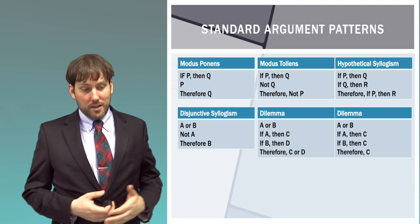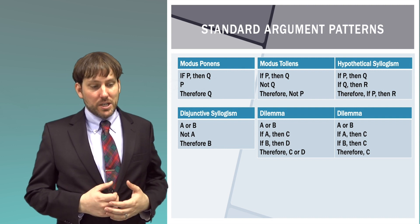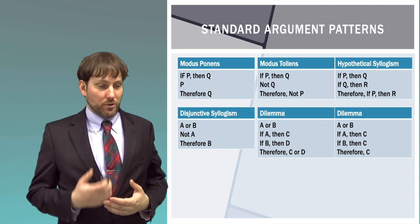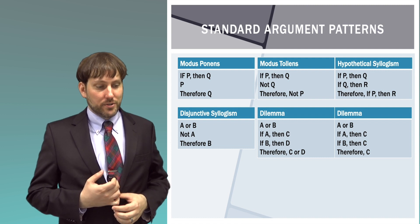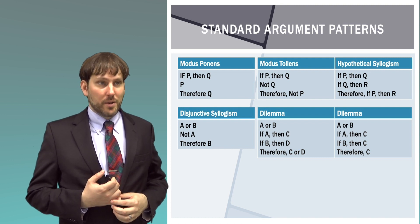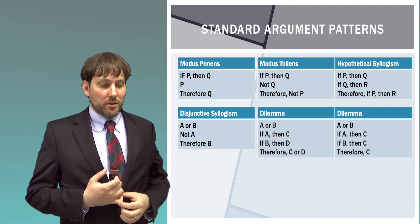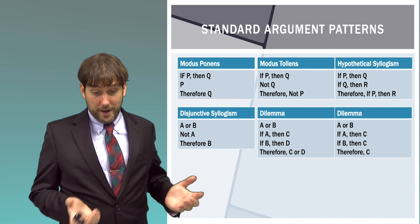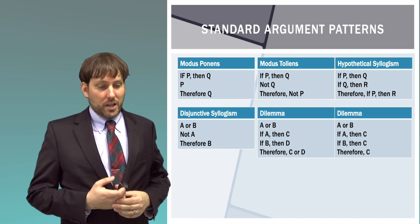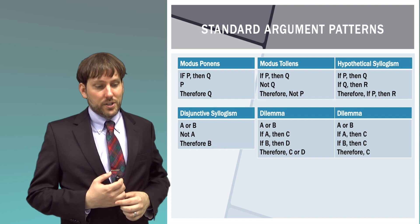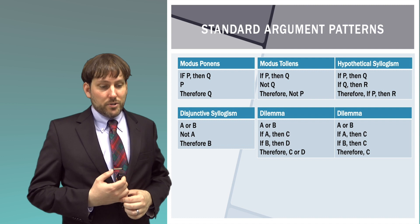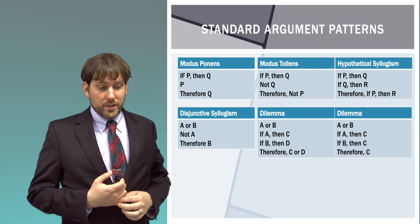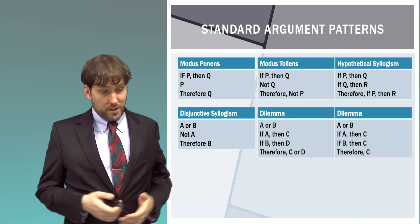A or B; if A, then C; if B, then D; therefore C or D. Either it is winter or summer. If it is winter, then it is cold outside. If it is summer, then it is raining. Therefore, it is cold outside or it is raining. A or B; if A, then C; if B, then C; therefore C. Either it is summer or it is fall. If it is summer, then it is hot outside. If it is fall, then it is hot outside. Therefore, it is hot outside. So these are the standard forms.